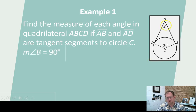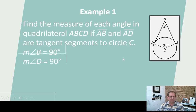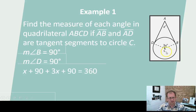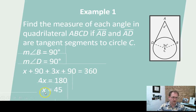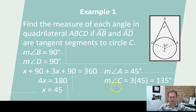Once we know that X is 45, we can find 3 times 45. Measure of angle B is 90 and D is 90 because they are radii intersecting tangents. So X plus 90 plus 3X plus 90 equals 360. 4X equals 180 degrees after combining like terms and subtracting 180. Dividing by 4, X is 45 degrees. And 3X is 3 times 45, or 135 degrees.